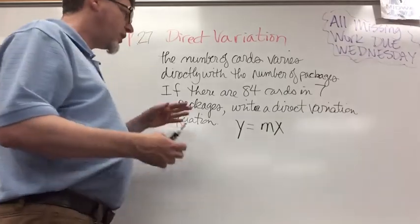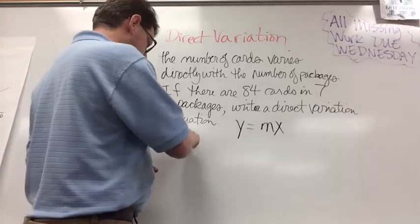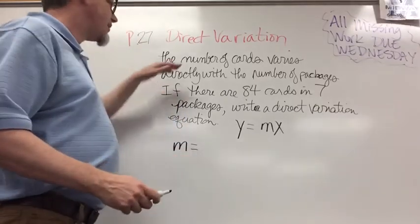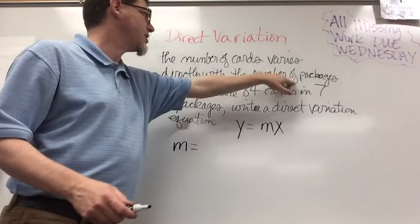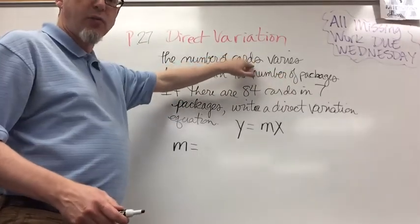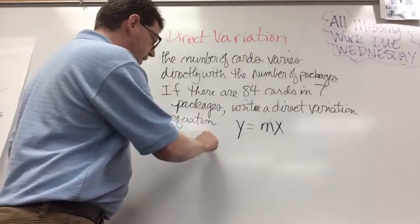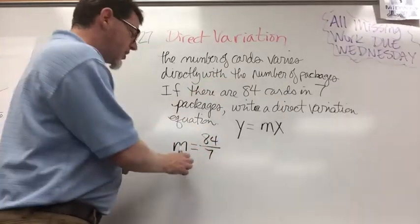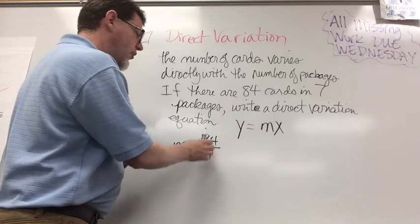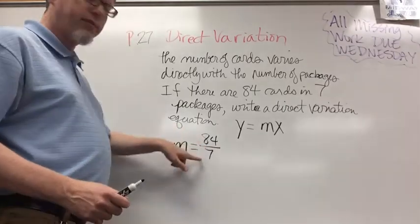Well we know from the problem that if the number of cards varies directly with the number of packages, then the number of cards must be the y, which is 84, over 7, which is the x. So m is y over x, or rise over run, which is 84 over 7.